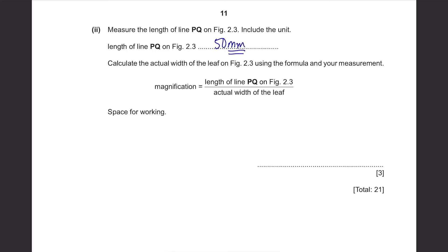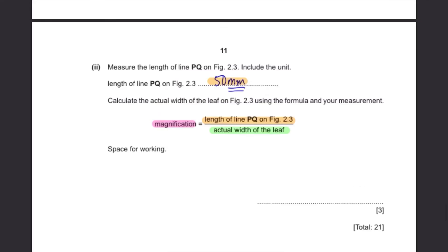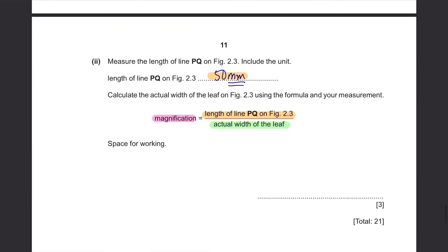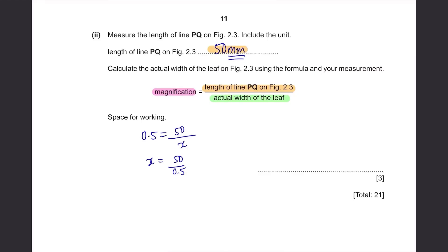Calculate the actual width of the leaf on Figure 2.3 using the formula and your measurement. Magnification equals the length of line PQ on Figure 2.3 over actual width of the leaf. So we need to find the actual width. And the length of line PQ on Figure 2.3 we've just found it. It's 50mm. Then the magnification. I wonder if you guys would have noticed this. But there's magnification written here. 0.5. So just substitute the values to find the actual width of the leaf. The answer is 100mm.